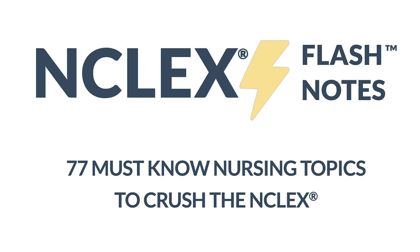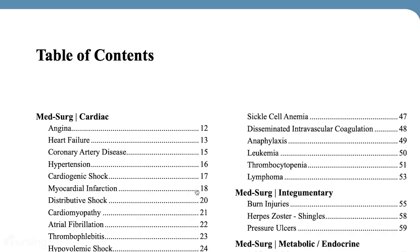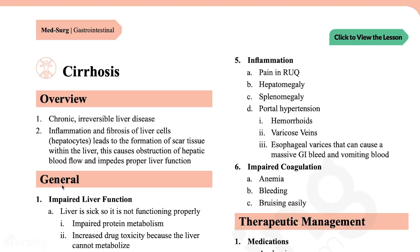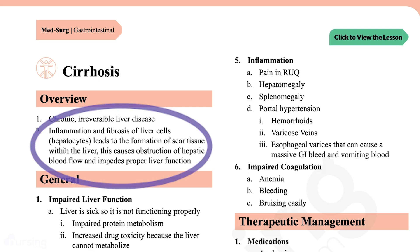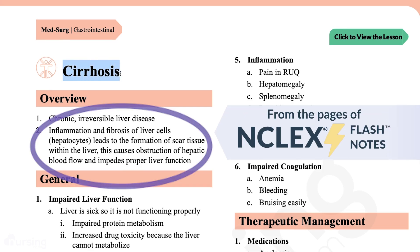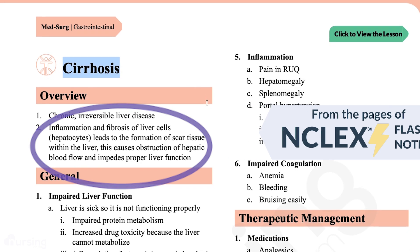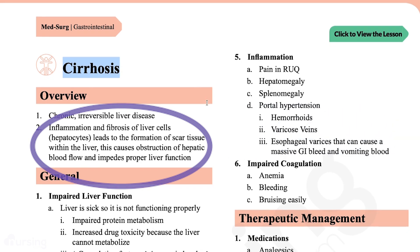In this lesson, we're going to talk about cirrhosis. Cirrhosis is a chronic inflammation and fibrosis — which fibrosis really just means scarring — of liver tissue. Essentially what happens is as liver tissue gets damaged, it begins to form scar tissue.